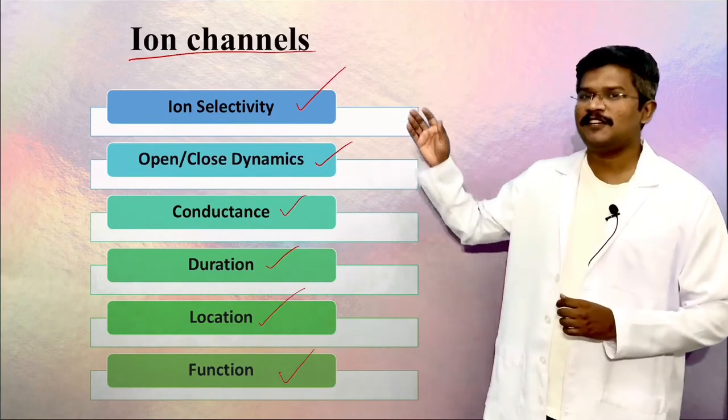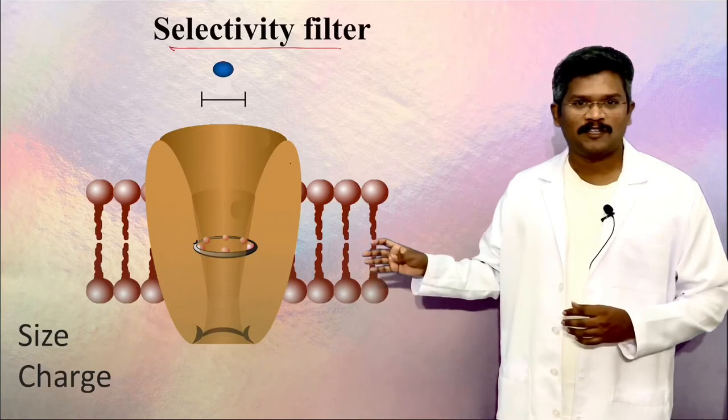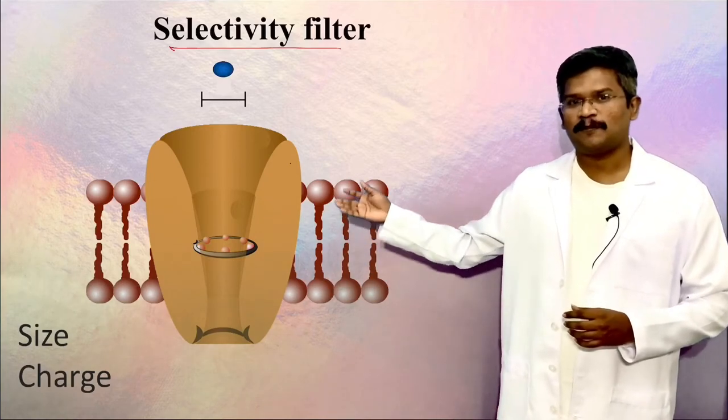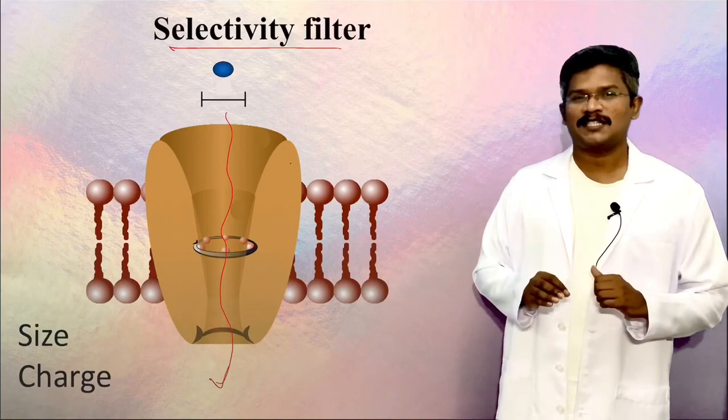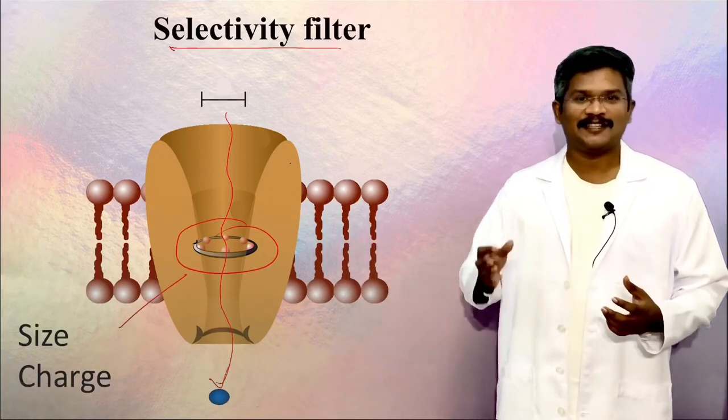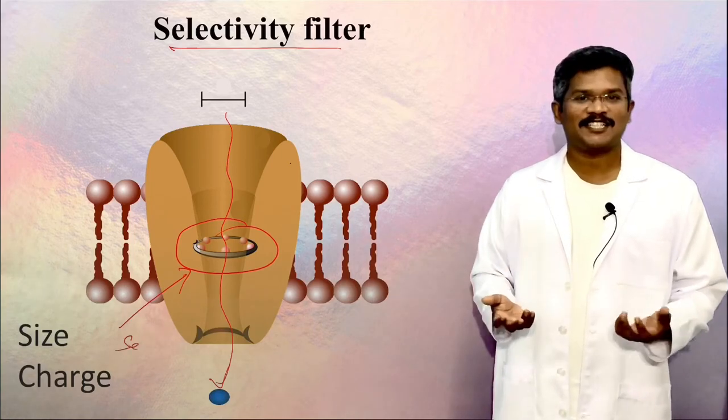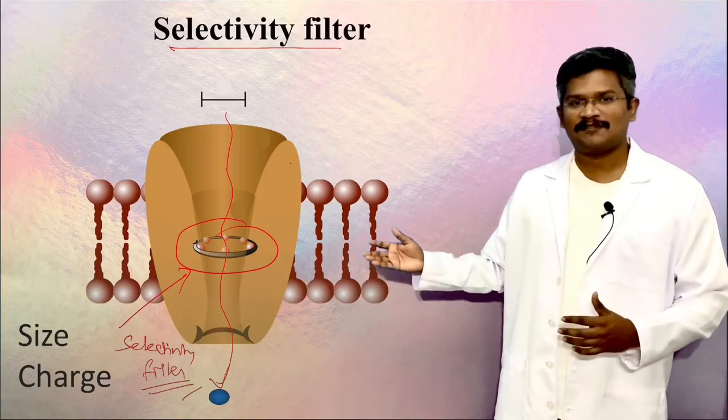The ion selectivity is based on the presence of a selectivity filter in the pore. This illustration shows a pore-forming domain of an ion channel. A specific amino acid sequence within the pore gives them the ability to select the ions based on size and charge. Based on which ion moves through, we classify them...